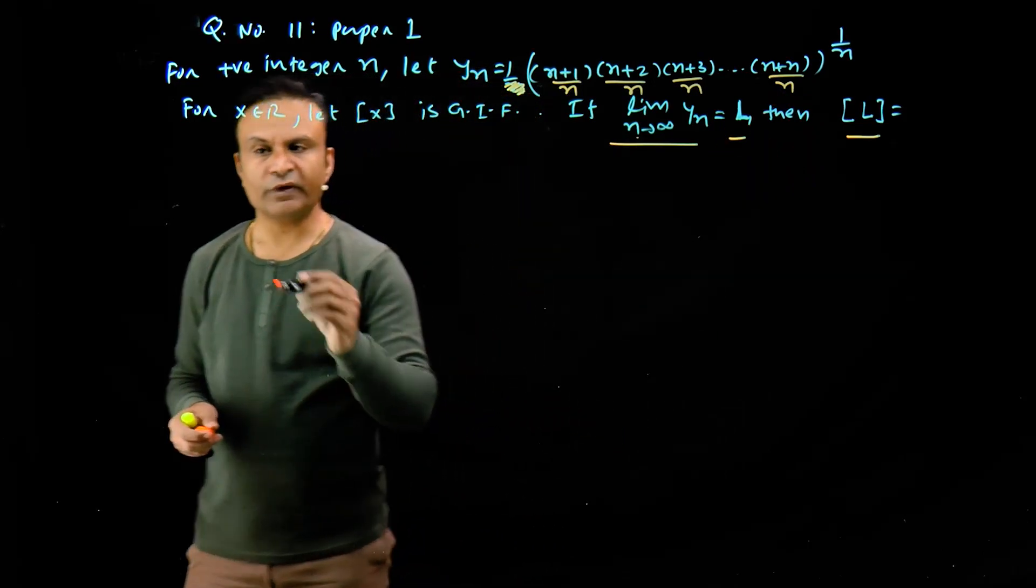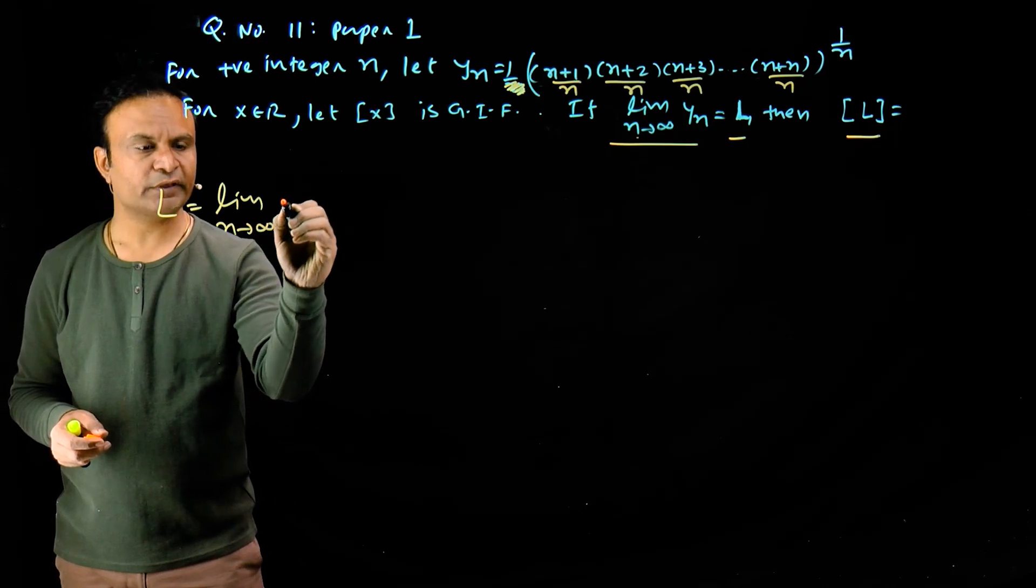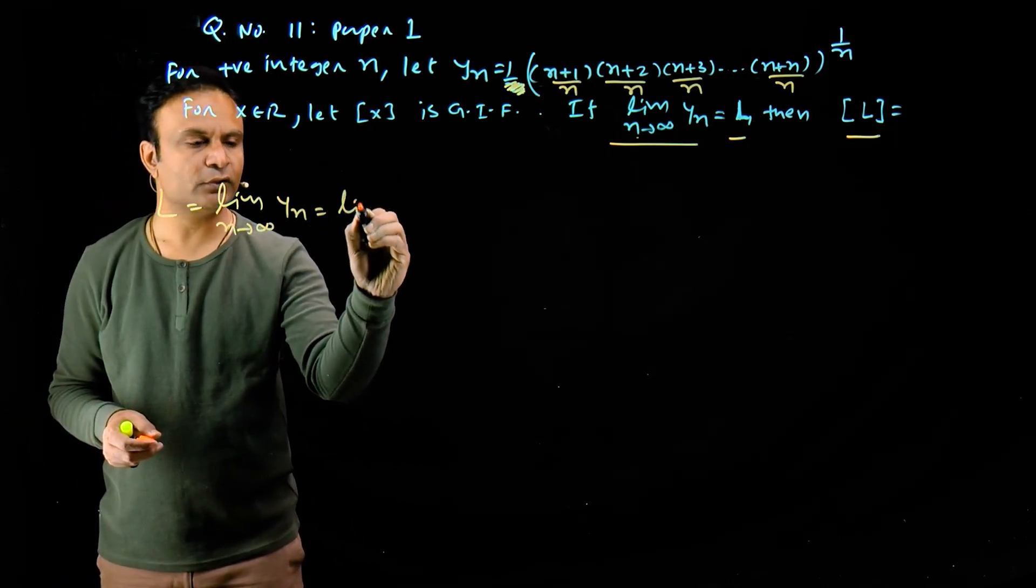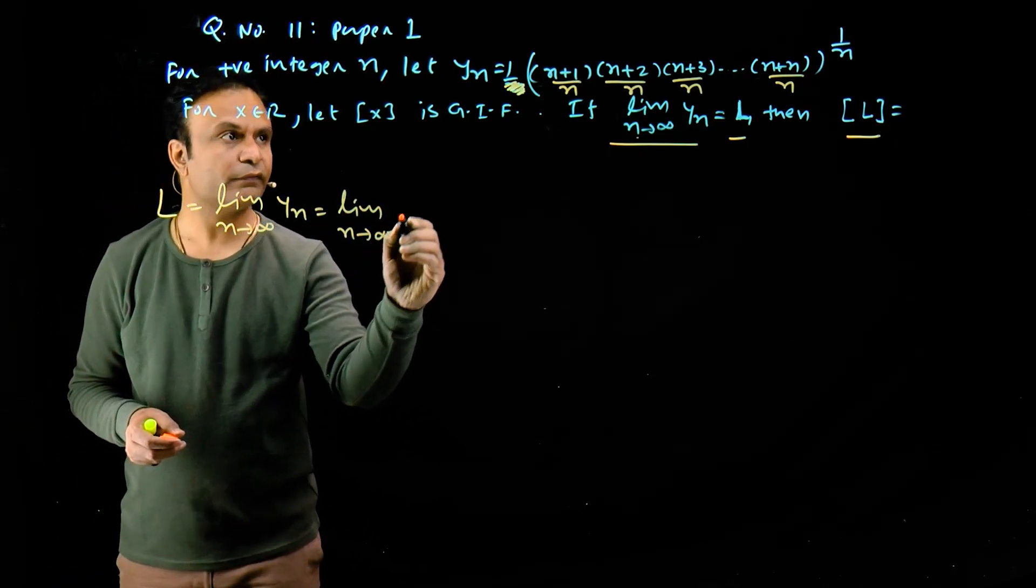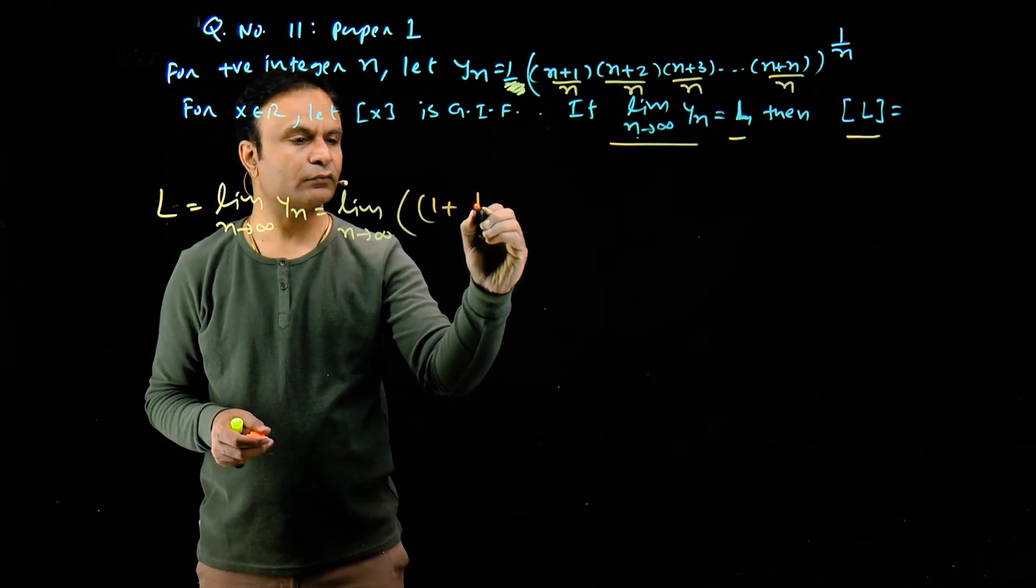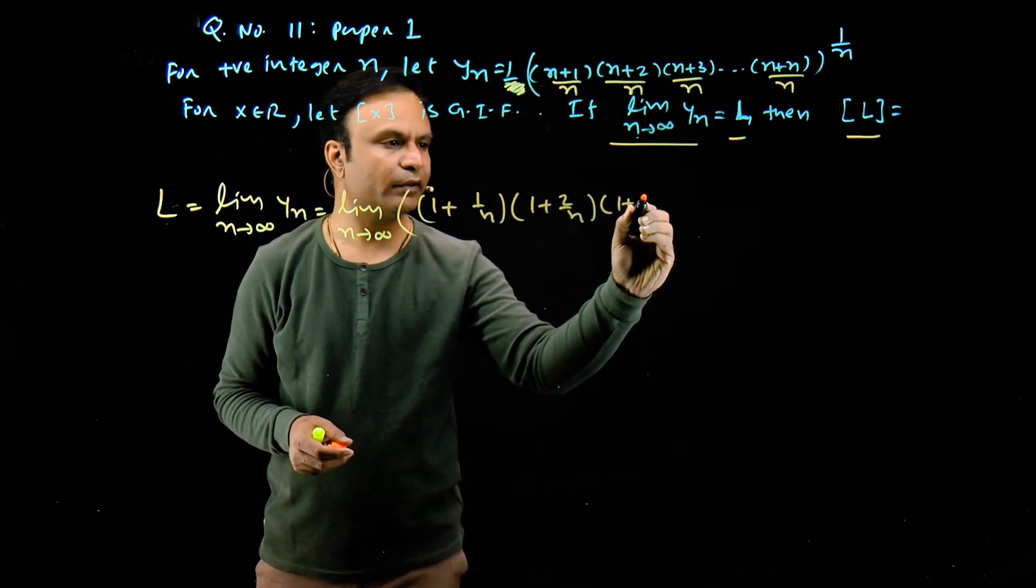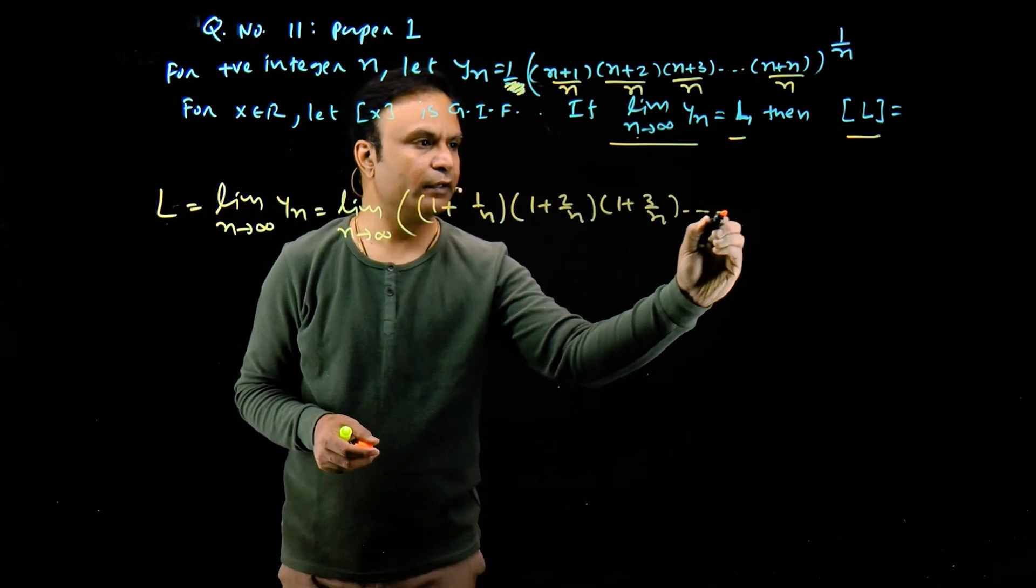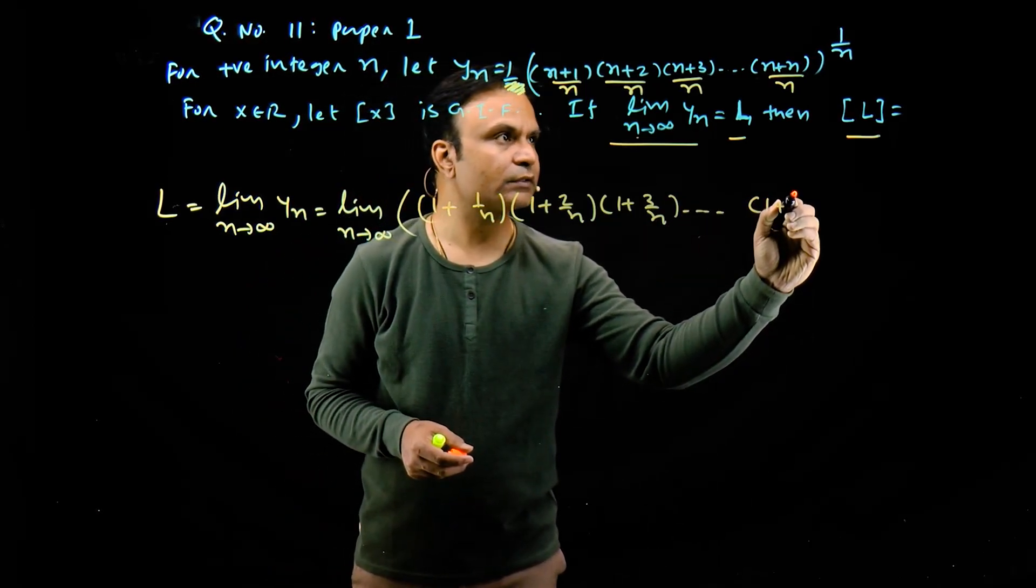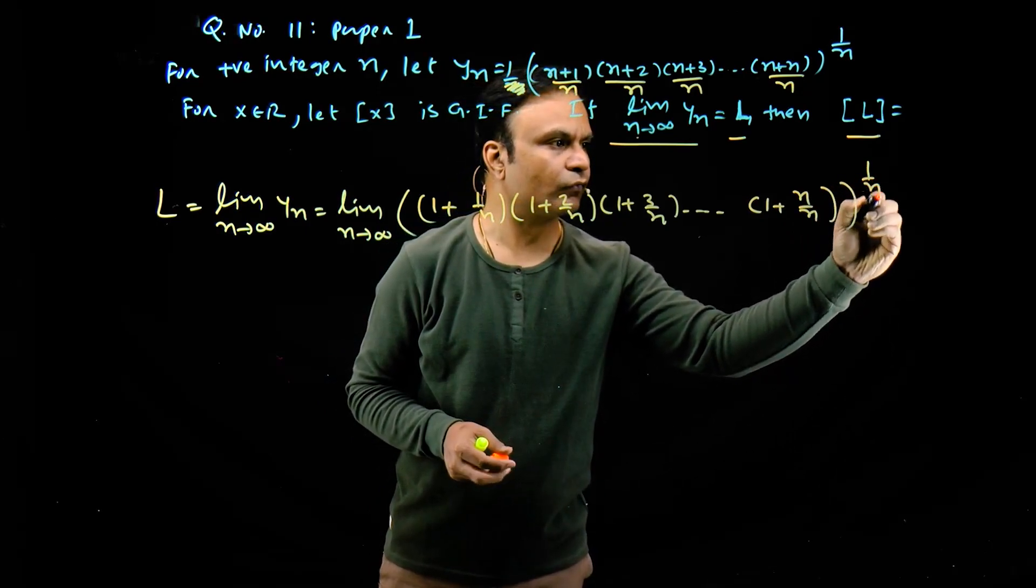So we have now l is equal to limit n tends to infinity of yn, which equals limit n tends to infinity of this: (1 + 1/n) multiply by (1 + 2/n) multiply by (1 + 3/n) up to (1 + n/n) whole power 1 upon n.